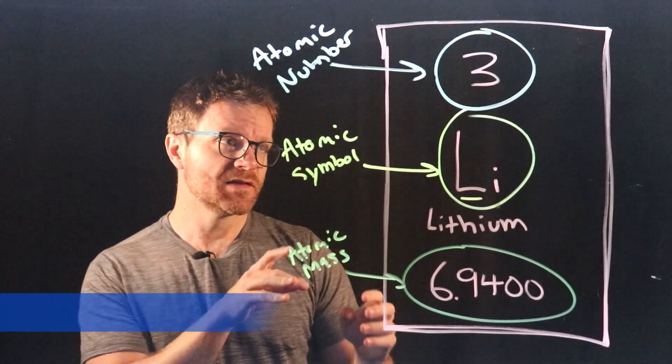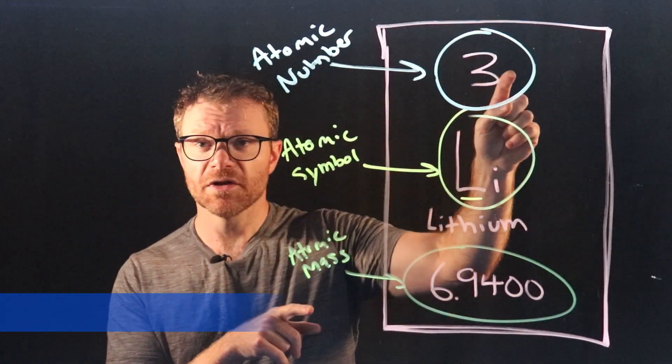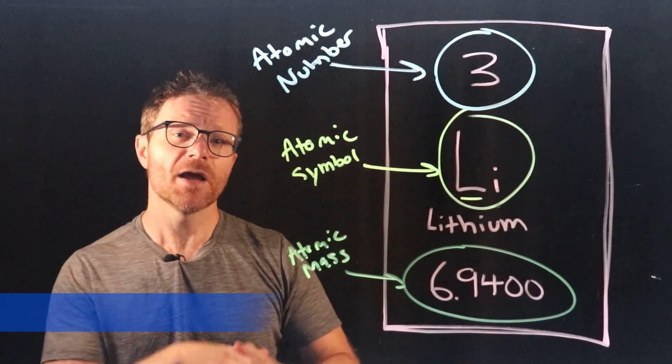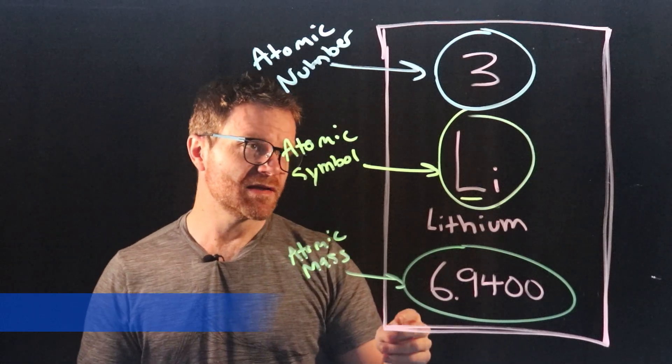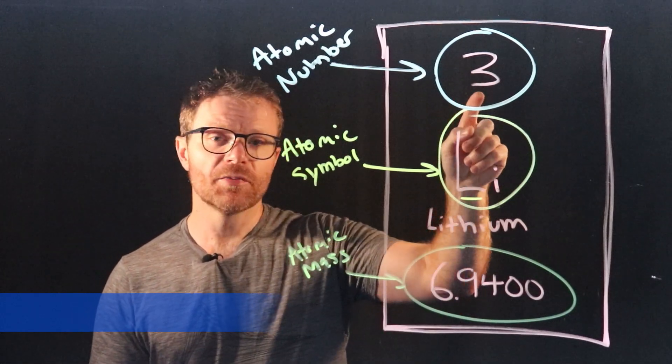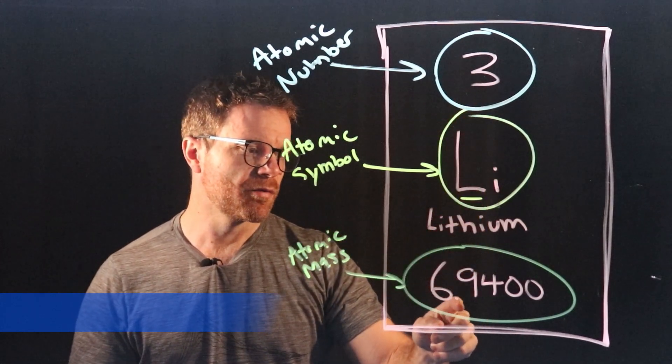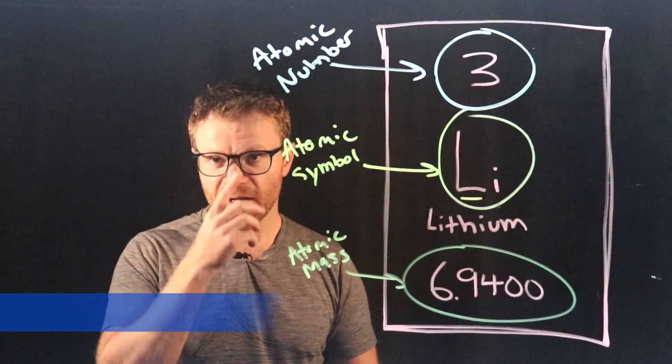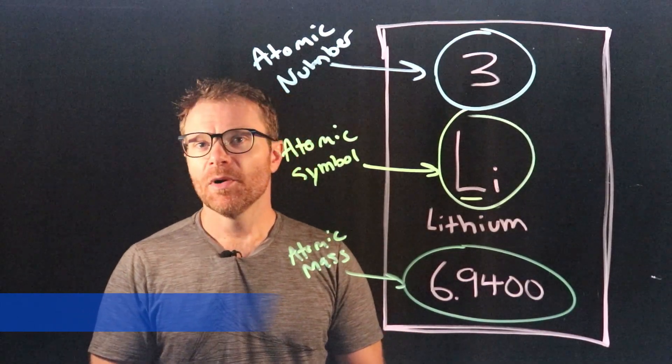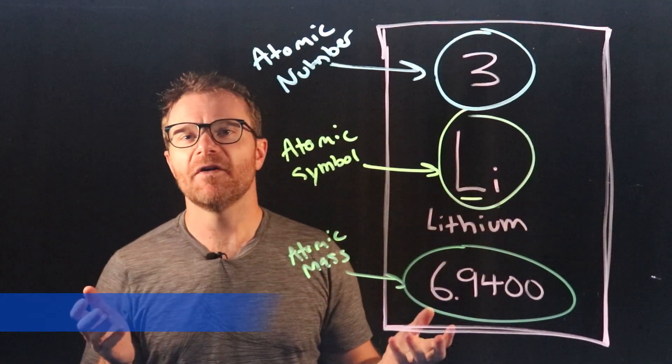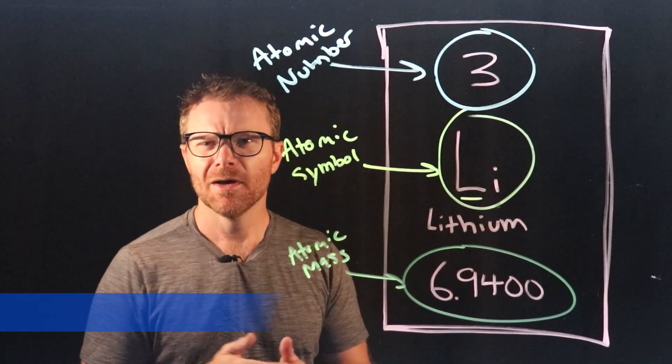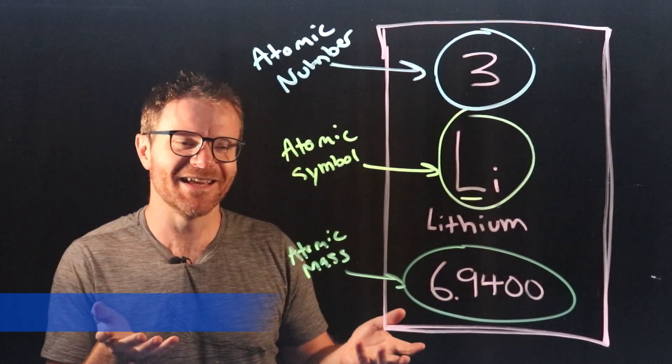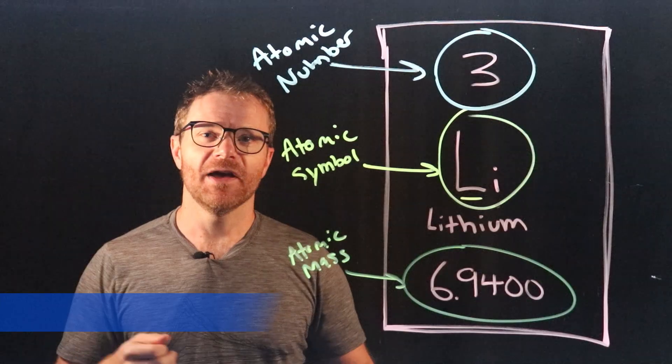Now what is the atomic mass? The atomic mass is the number of protons in the nucleus plus the number of neutrons. Now what's weird about this is how could you have three protons in the nucleus and then 3.9400 neutrons in the nucleus? You can't have a fraction of a neutron. And that's exactly right. But you might have heard that some country has 2.5 children per family. Well how can you have 0.5 of a child? You know that doesn't make any sense. And that's because it's an average of all the families.